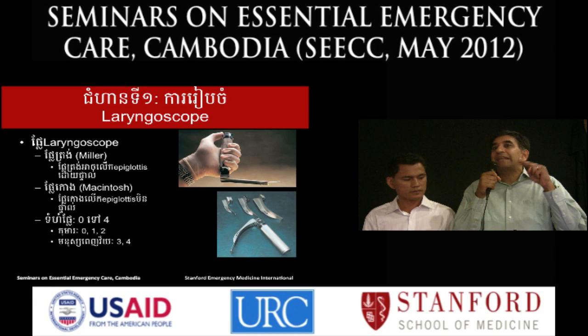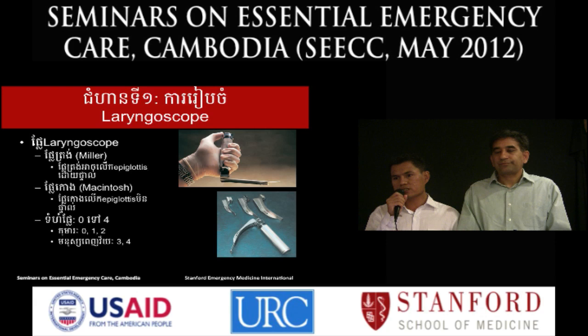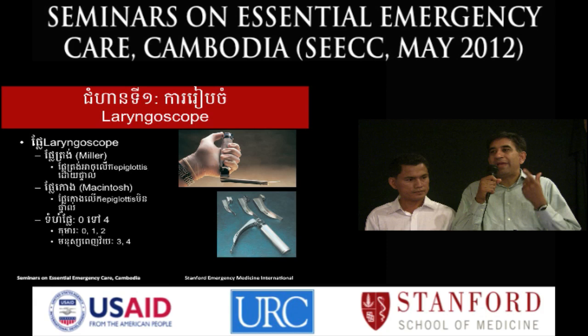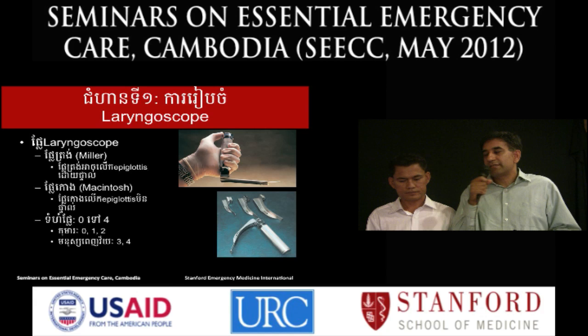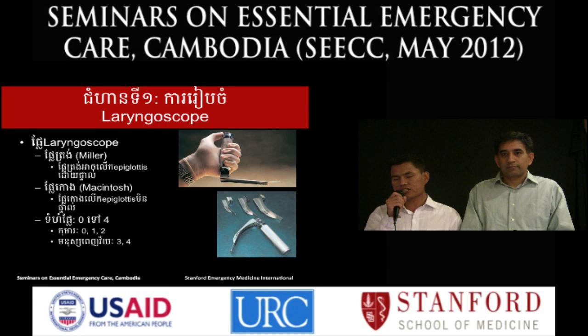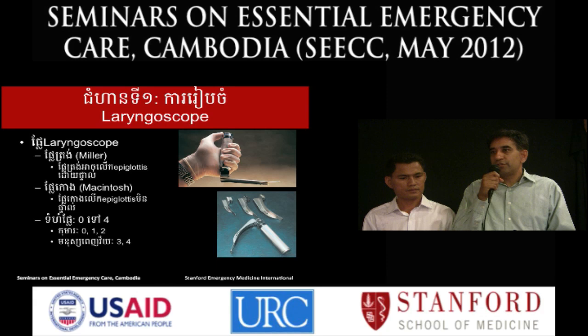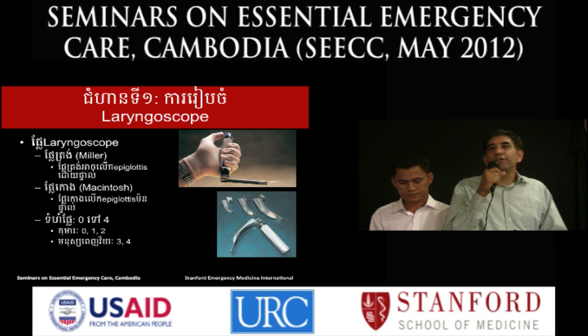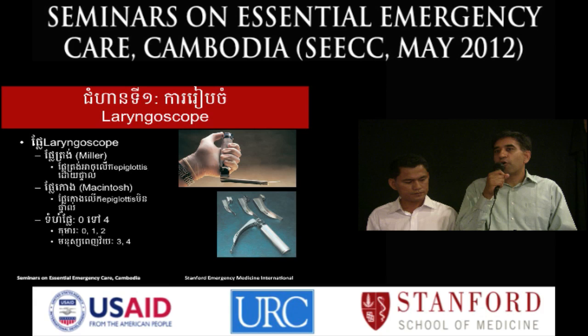The straight blade is typically used in very young children and directly lifts up the epiglottis. The curved blade is inserted into the space between the base of the tongue and the epiglottis — the vallecula — and indirectly lifts the epiglottis. Just as there are different endotracheal tube sizes, there are different blade sizes. Typically in children you use a 0, 1, or 2 sized blade, and in adults a 3 or 4 sized blade.